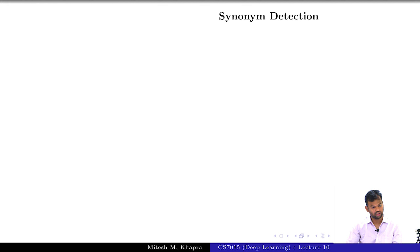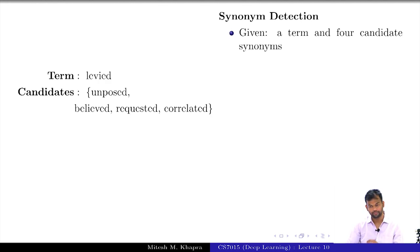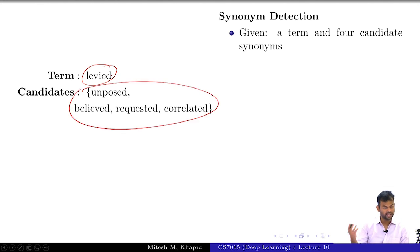Another task is synonymy detection. From a resource known as WordNet or from other dictionaries, you could get all the synonyms of a word. Then people create a corpus where you are given a word and given four candidates or some k candidates, out of which one of these is the correct synonym. The others are just distraction words.